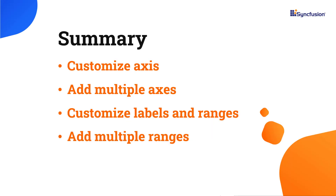In this video, I have shown you how to add multiple axes and ranges, and customize axes, labels, and ranges of a circular gauge. If you would like to try out the example used in this video, you can download it from the GitHub link in the description below. I have also shared a link where you can learn about obtaining a free license key to use our React Suite through our community license, if you are eligible. Thank you for watching this video. If you found it helpful, please give it a like and subscribe to our channel.